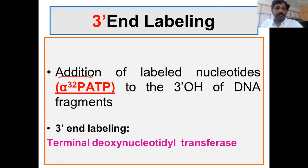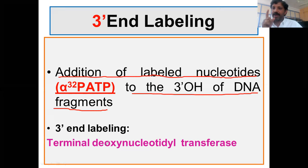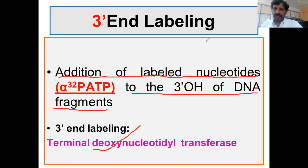Addition of labeled nucleotides — radioactive or non-radioactive — to the three prime OH of DNA fragments requires radio-labeled nucleotides or non-radio-labeled analogs or fluorescent dyes. There is one enzyme requirement for this: Terminal Deoxynucleotidyl Transferase (TdT). In the next slide we'll see the same thing in the form of a picture.